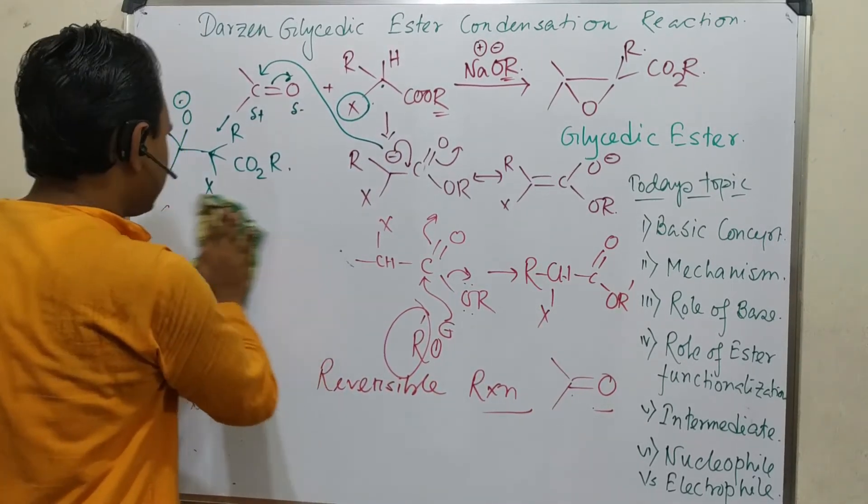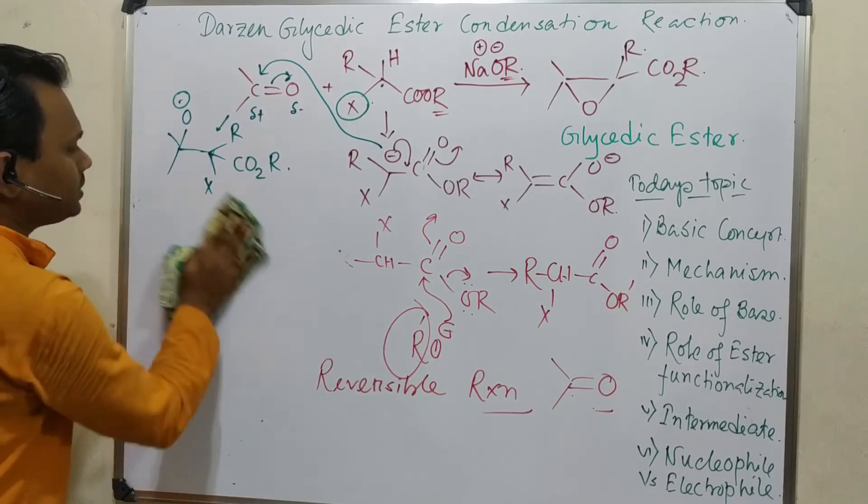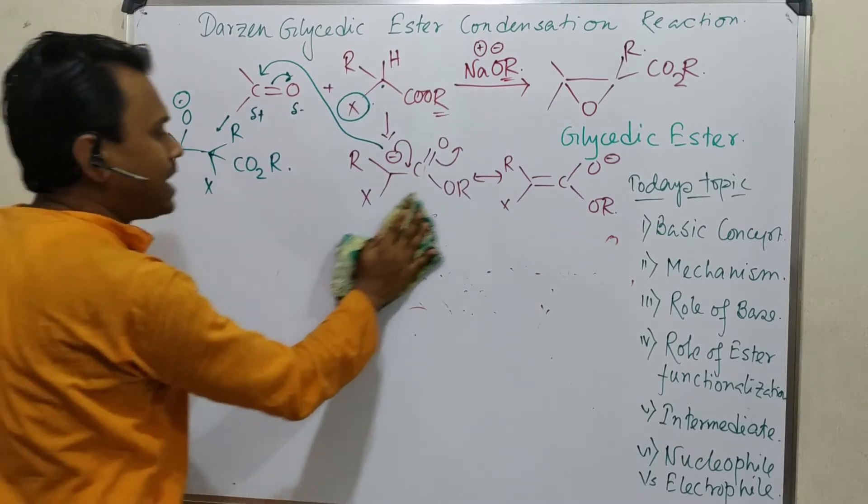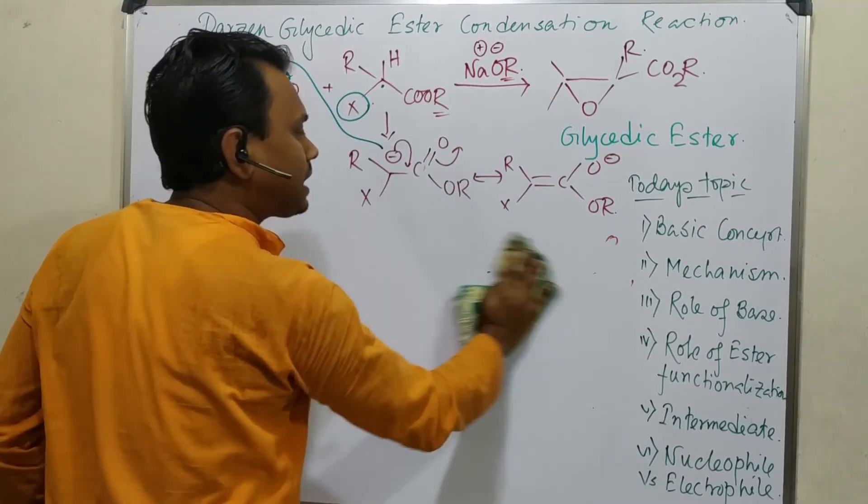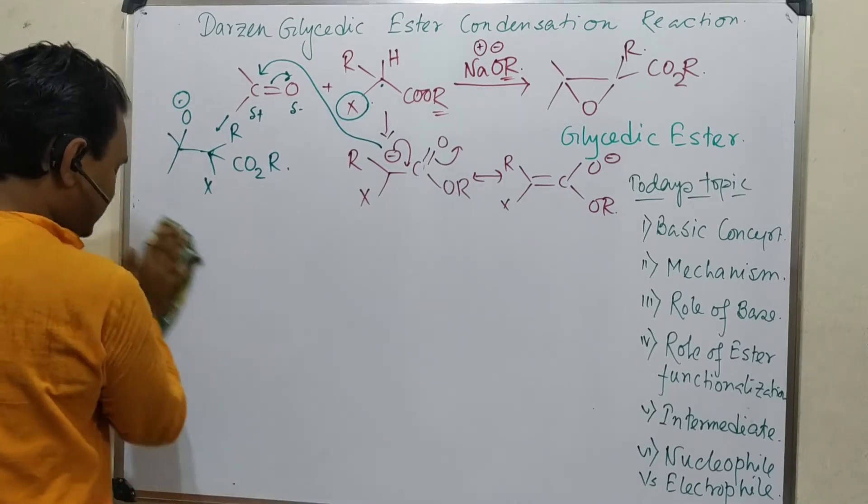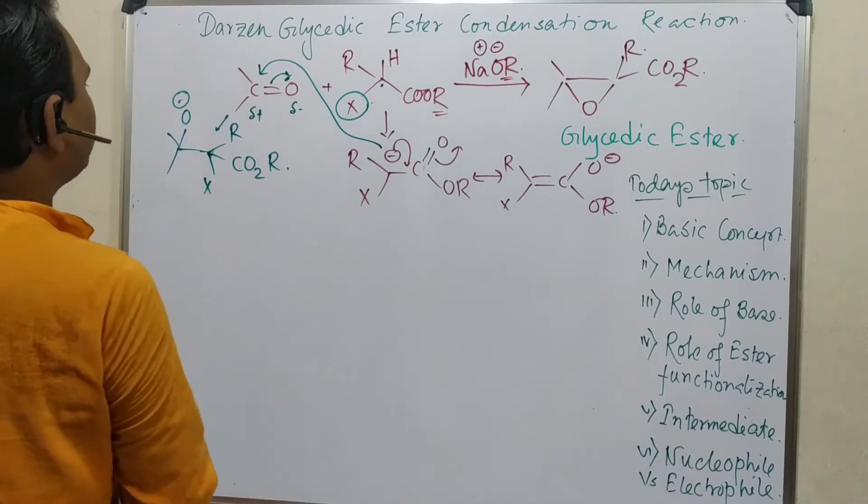So as the enolate is produced and it attacked this carbonyl carbon to form an addition product, in this case a specific thing will occur. What? See, here X is there.